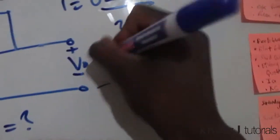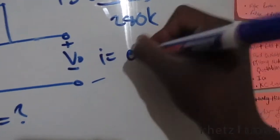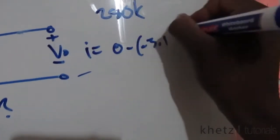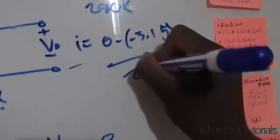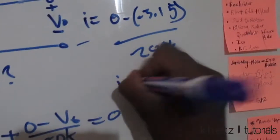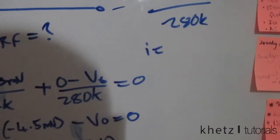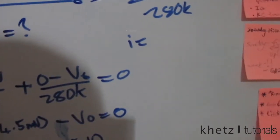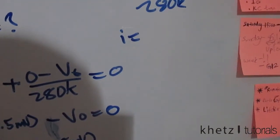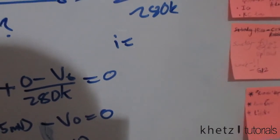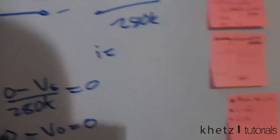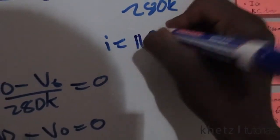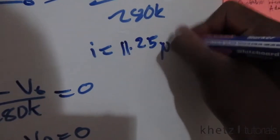Therefore, I equals zero subtract that divided by 280k. Substituting this into your calculator is going to give you 11.25 micro amperes.